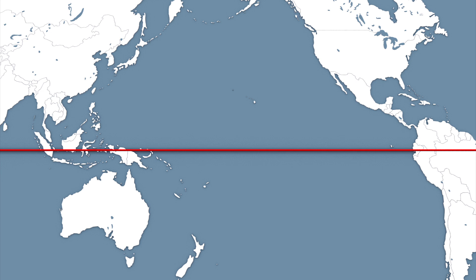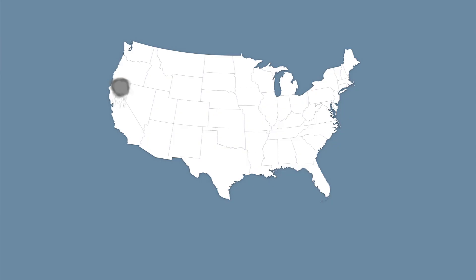The Climate Prediction Center says there's a 50–60% chance that the 2015 El Niño will continue through spring. El Niño will likely provide some rainfall relief to drought-stricken California, but it's not expected to have drastic global effects.